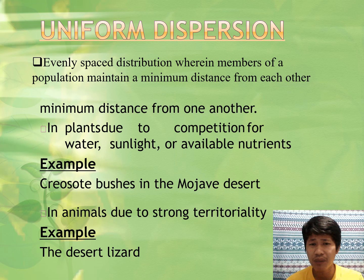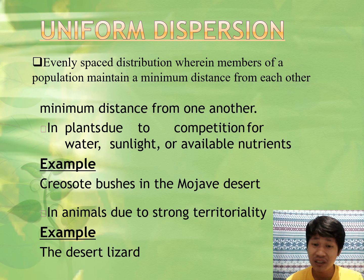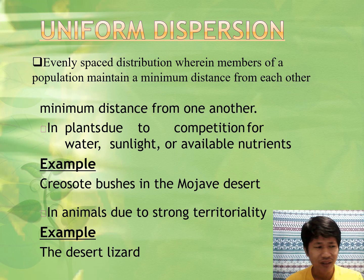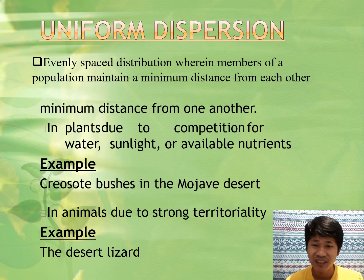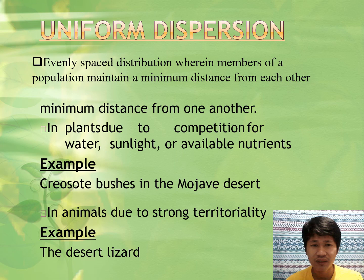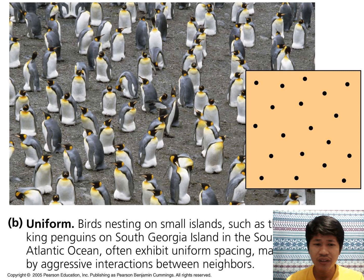Uniform dispersion is an evenly spaced distribution where members of the population maintain a minimum distance from each other. This is not really applicable to humans because we come in patches — we are clumped because of the family. But in other living organisms, yes. For example, some bushes, or in animals due to strong territoriality. Some animals that are highly territorial are solitary — like the leopard, which hunts alone compared to lions. Also desert lizards. An example of uniform distribution is birds nesting on a small island — penguins, for example.